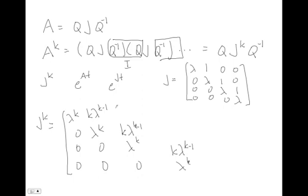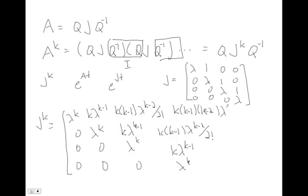And then the next term here is k times k minus one times lambda to the k minus two all over two factorial. And that is here as well. K times k minus one times lambda to the k minus two over two factorial. And then it's pretty easy at this point to figure out what the pattern is. And so you say well this is going to be k times k minus one times k minus two times lambda to the k minus three all over three factorial in this spot.